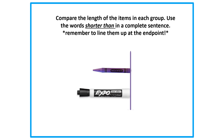The first thing I want to make sure is to see if my items are lined up at an end point, which they are. I see that my items are lined up at this end point right here so we can accurately compare the length of these items. I think I've made my decision on which item is shorter than the other. Do you know which one is shorter than the other? I think that the crayon is shorter than the Expo marker. Do you agree or disagree?